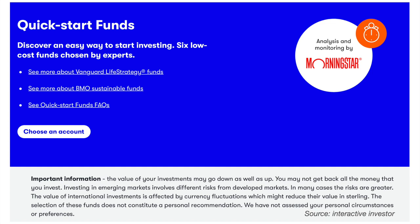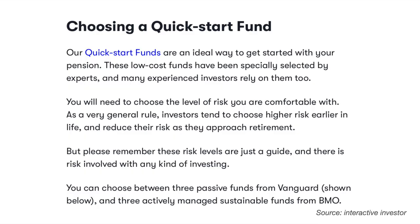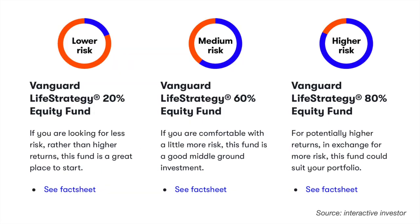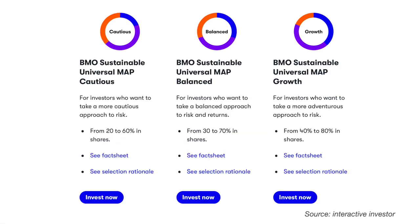For beginners and even experienced investors who want an easy investment choice, the quick start funds is a popular option. These provide a choice of funds with different risk ratings — in general the younger you are the more likely you are to go for a higher risk rating, and as you approach retirement you're more likely to de-risk your portfolio and go for lower exposure to equities. With a quick start fund you can choose from one of three Vanguard LifeStrategy funds, which are really popular passive investments with an ongoing charge of 0.22%. Or there are three actively managed sustainable funds called BMO, which have a higher ongoing charge of 0.35%. It's useful to note that the Vanguard LifeStrategy 80 and LifeStrategy 60 are typically within the top 10 most popular funds purchased with Interactive Investor.